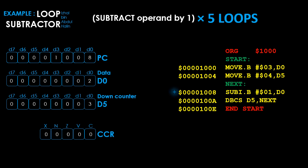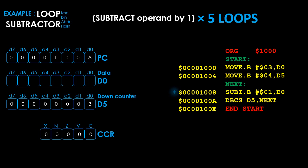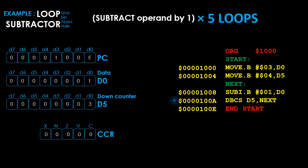The program counter is now pointing back at address 1008. Before the instruction is executed, the program counter must point to the next address. The instruction at address 1008 is executed — it subtracts 1 from D0 and stores the value 1 back in D0. The status register is updated to 0000000. The program counter is updated to 1000E before the next instruction is executed. When the DBCS instruction is executed, it checks the C flag.